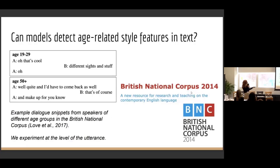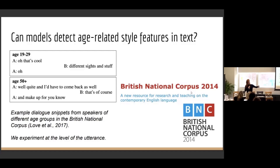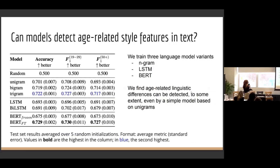We needed some training data and made use of the British National Corpus, which was gathered from user-submitted dialogues from different social demographic backgrounds and also different ages, critically. We selected a subset of these dialogues containing only pairs of speakers of the same age, with the idea that this separation would allow us to better extract distinct properties of language from these two groups.